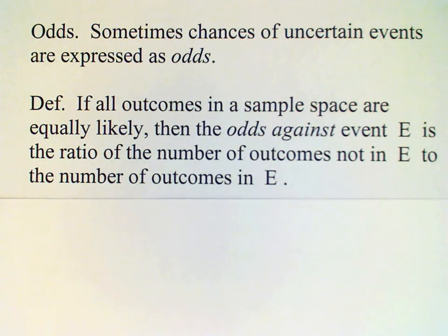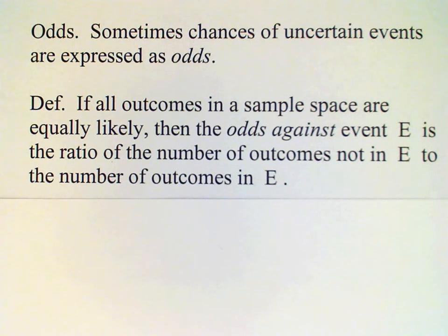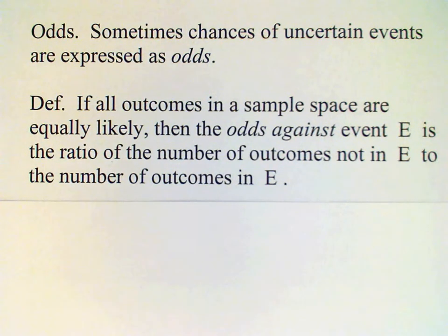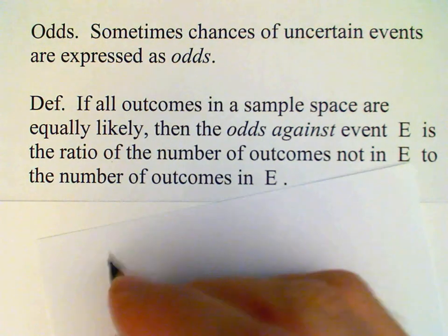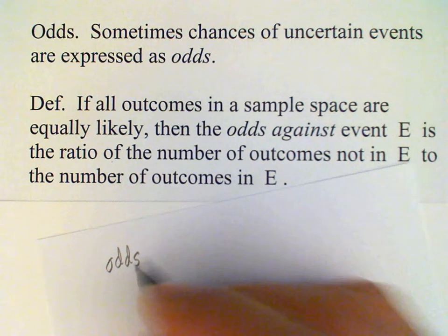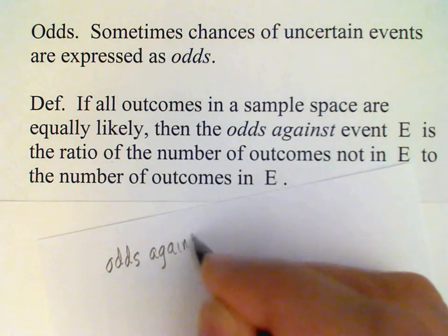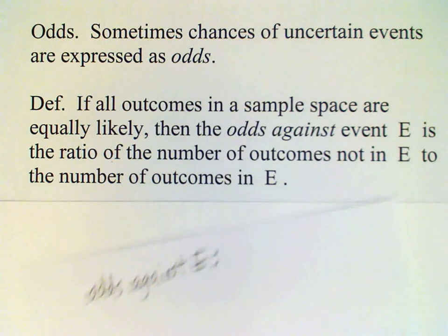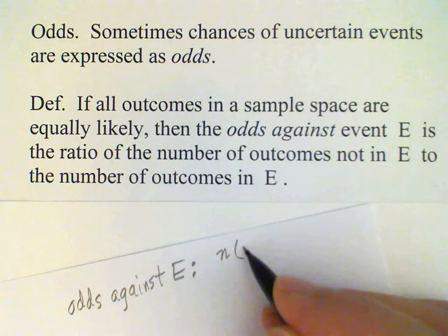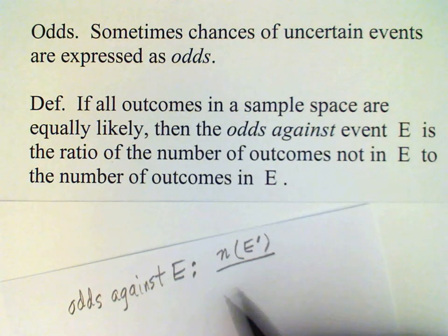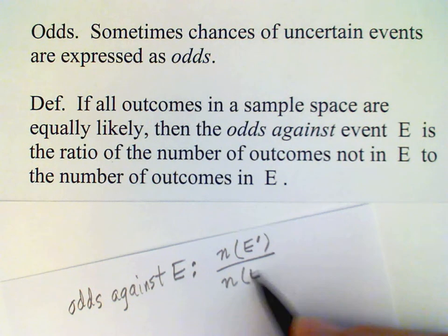So let's suppose that we have a sample space where all the outcomes are equally likely. Then we have an event E, and we want to know the odds against that event. This is defined to be the ratio of the outcomes that are not in E to the number of outcomes that are in E. So, assuming the sample space has only equally likely outcomes, the odds against E is defined as the number not in E — the number in the complement of E — divided by the number of outcomes in E.